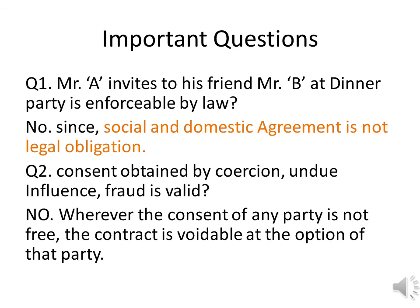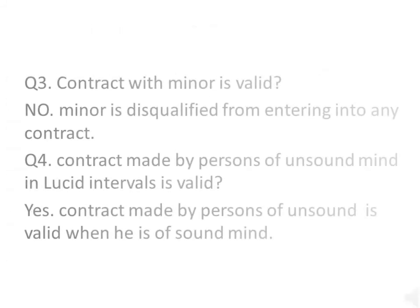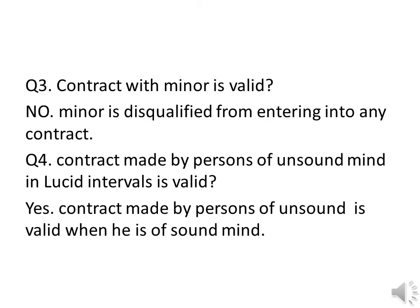Review Q&A: Mr. A invites his friend Mr. B to a dinner party — is this enforceable by law? No, since a social and domestic agreement is not a legal obligation. Is consent obtained by coercion, undue influence, or fraud valid? No. Wherever the consent of any party is not free, the contract is voidable at the option of that party. Is a contract with a minor valid? No — a minor is disqualified from entering into any contract. Is a contract made by a person of unsound mind during lucid intervals valid? Yes — a contract made by a person of unsound mind is valid when he is of sound mind.